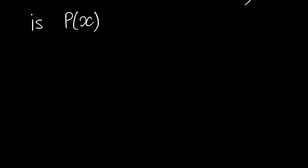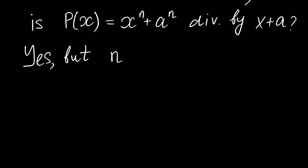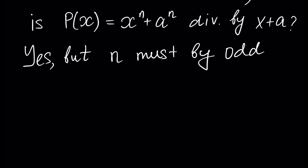Let's pose a natural question: is the polynomial P of x, which is x to the power n plus a to the power n, divisible by the binomial x plus a? The answer is yes, but n must be odd — that is, n must be one, three, five, seven, and so on — not even numbers.